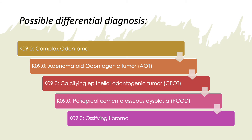The possible differential diagnosis based on the x-rays already acquired includes: a complex odontoma, an adenomatoid odontogenic tumor (AOT), a calcifying epithelial odontogenic tumor (CEOT), periapical cemento-osseous dysplasia, or an ossifying fibroma.